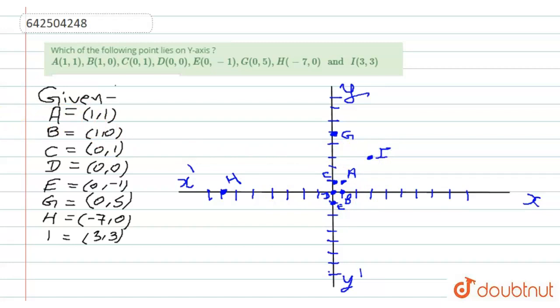we are asked to find a point on the y-axis. And as we can see, on the y-axis we have G, C, and E on the y-axis. So we have C, E, and G on the y-axis.